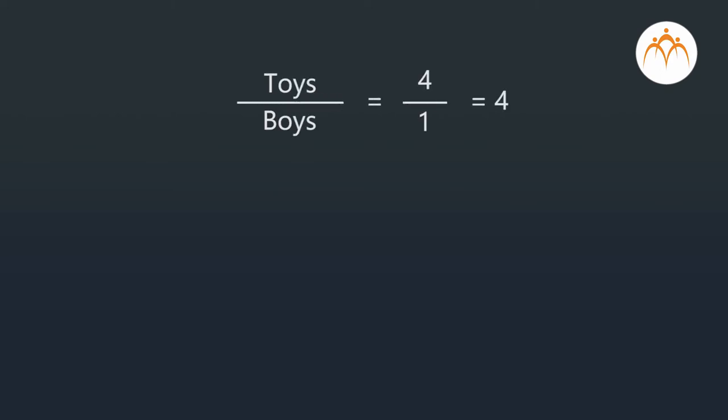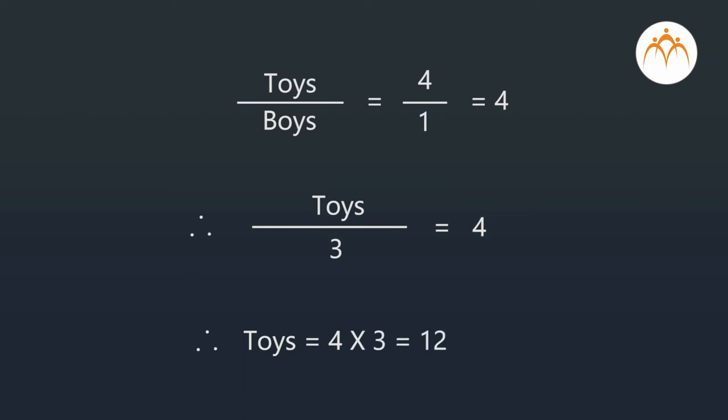Now, tell me if one boy makes 4 toys in 2 days, then how many toys will 3 boys make in 2 days? The number of days is not changing, so the amount by which boys are increasing, in the same proportion the toys will also increase. Again it is a direct variation. So, toys divided by boys equals 4 divided by 1, which is equal to 4. For 3 boys, toys divided by 3 equals 4, so toys equals 4 into 3, which is equal to 12. So Dada, in 2 days, 3 boys will make 12 toys.